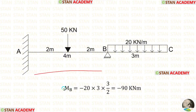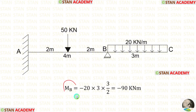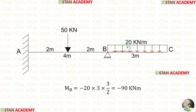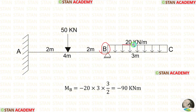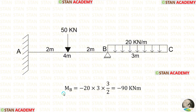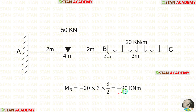In this beam, we can easily calculate MB because after point B there is overhanging. To find MB, we have to calculate the moment about B from point C. In BC, there is a UDL of 20 kilonewton per meter and the length of BC is 3 meters. To calculate the moment about B, we multiply the load with the distance and distance by 2. We get MB equal to minus 90 kilonewton meter. In the case of overhanging, we always apply load values as negative, which is why we get a negative value.